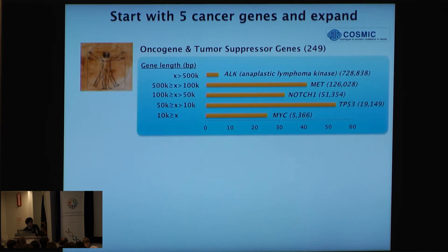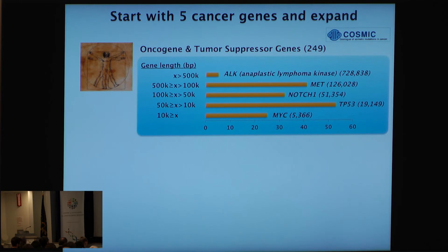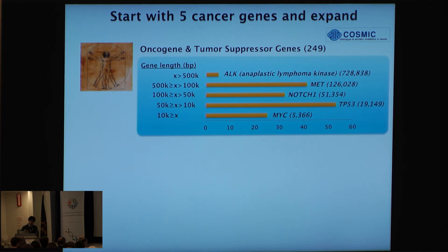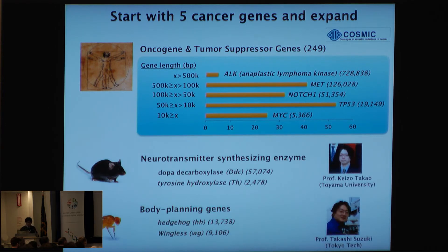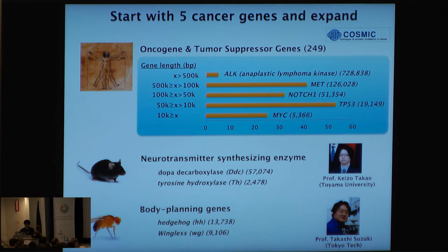The genes we are targeting first are cancer-related genes in humans. There are roughly 250 genes registered in cancer gene databases, but in the beginning we are focusing on five genes which differ in gene length. As Jeff mentioned, one of the purposes for the first phase of the GP-WRITE project is technological development. I think we are making some progress and solving technical issues that we cannot foresee right now. Once we develop the technique, maybe we want to apply this basic strategy to different animal systems.